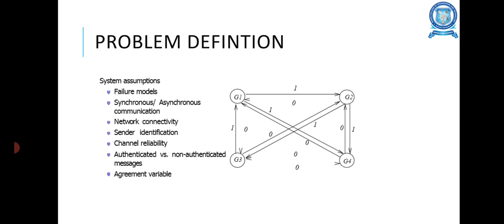Problem Definition: In the Consensus, the system assumptions are Failure Models, Synchronous and Asynchronous Communication, Network Connectivity, Sender Identification, Channel Reliability, Authenticated vs Non-Authenticated Messages, and Agreement Variable.